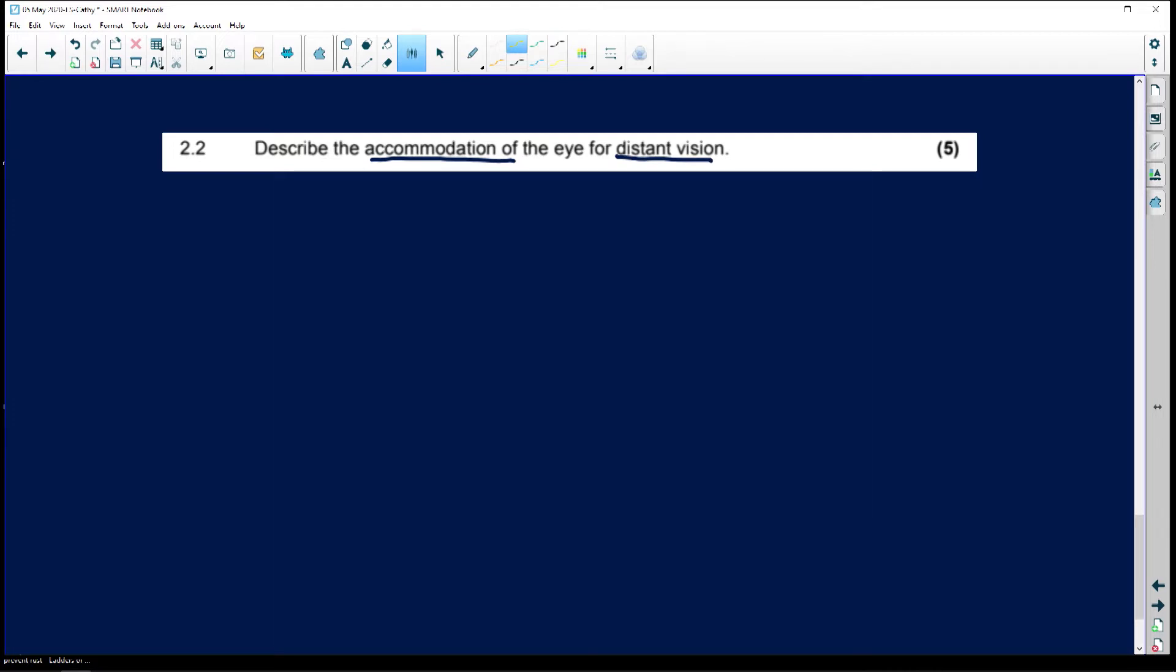Now, accommodating means that your eye will move from a nice round little lens for near vision and it changes shape to a nice long, flatter lens for far or distant vision.